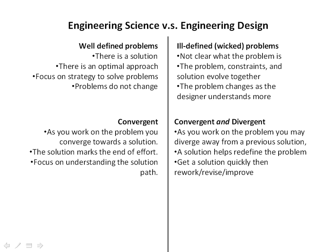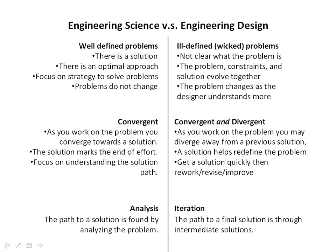Engineering science focuses on analysis — the path to a solution is found by analyzing the problem, and we really hone your analysis skills in engineering science courses. In engineering design, what's more important than spending a lot of time analyzing problems is iterating. The path to a final solution is through intermediate solutions. So generating solutions quickly, trying them on for size, and learning more about the problem you're actually solving is the way to success.